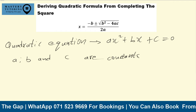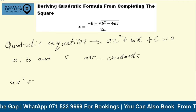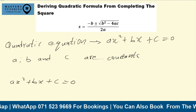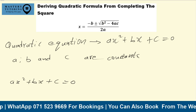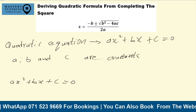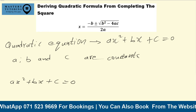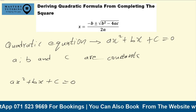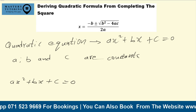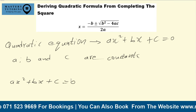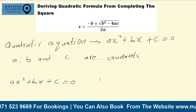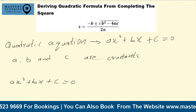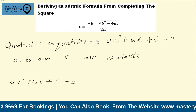We're going to derive the quadratic formula from the quadratic equation using completing the square. Starting with ax² + bx + c = 0, the first rule says you have to divide the whole equation by a. The reason we do that is we want the coefficient of x² to be one, so to make it one we divide the whole equation by a.